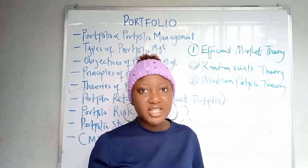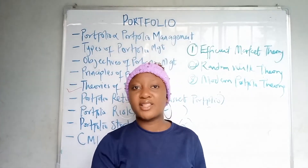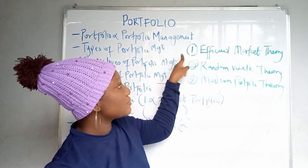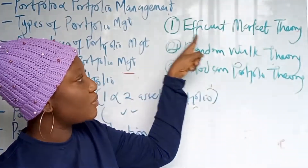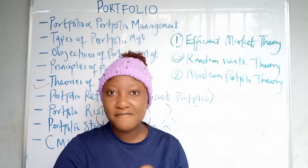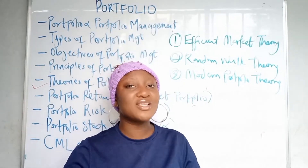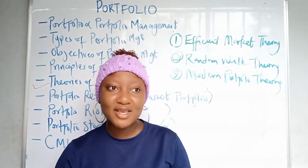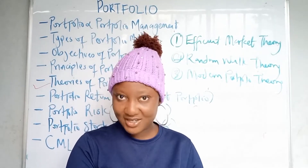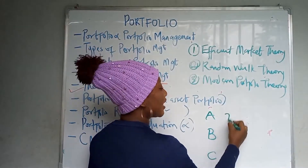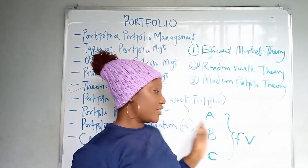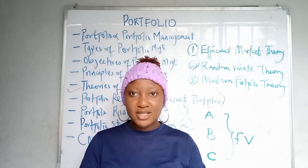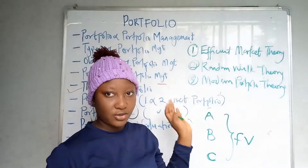A theory is simply someone's proposition or claim. The efficient market theory holds that stocks always trade at their fair value, reflecting all available information, and it is impossible for an investor to outperform the market by selling stocks at an inflated price or buying undervalued stocks. The only way an investor can outperform the market is by taking a higher level of risk.